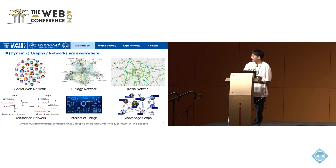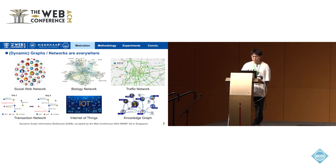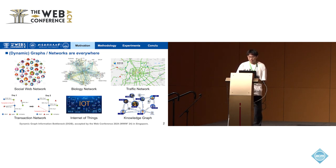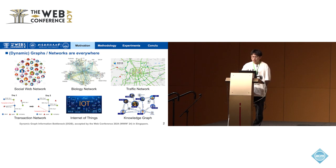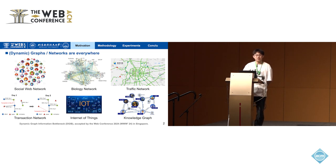As is known to all, graphs and networks are everywhere in real-world scenarios. Additionally, static graphs will evolve in terms of node features and graph structures, and we call that type of graph a dynamic graph. For example, the traffic network describes traffic flows of an urban transport network at different times of the day. Although the time dimension brings more interactive patterns and features into the graph, it also brings learning problems such as reduced generalization performance and reduced robustness of the GNN model.